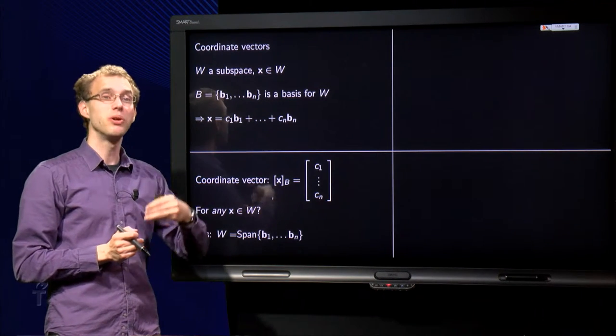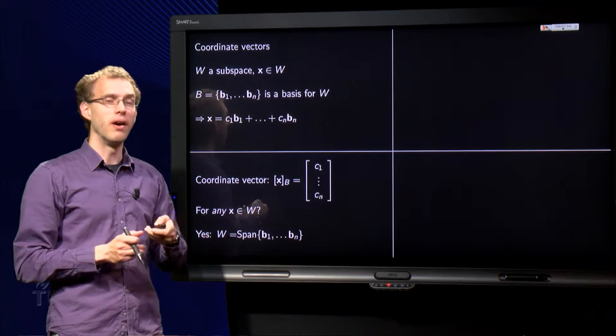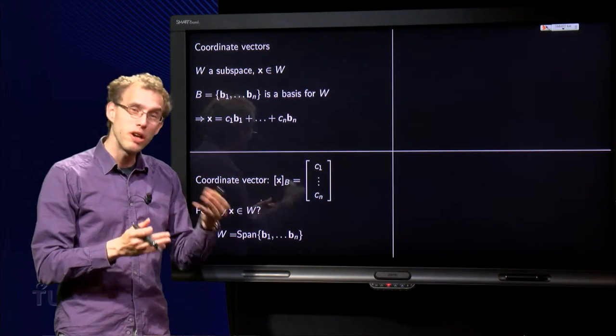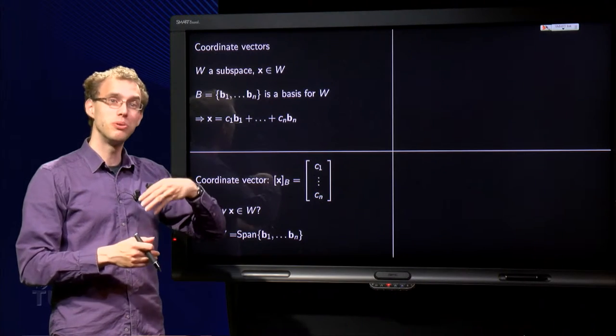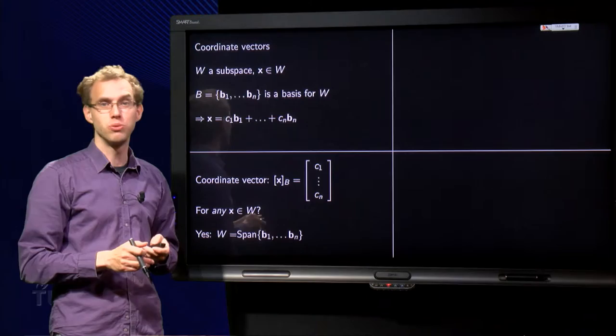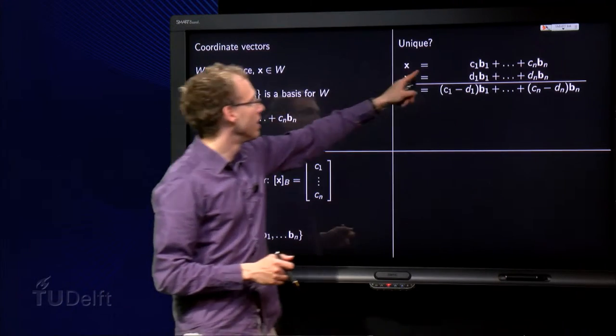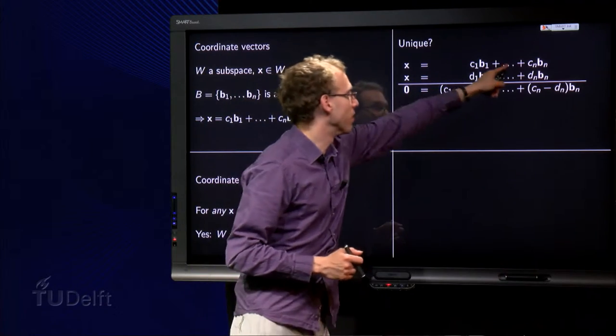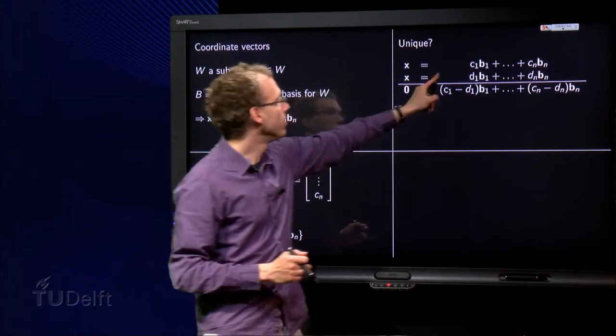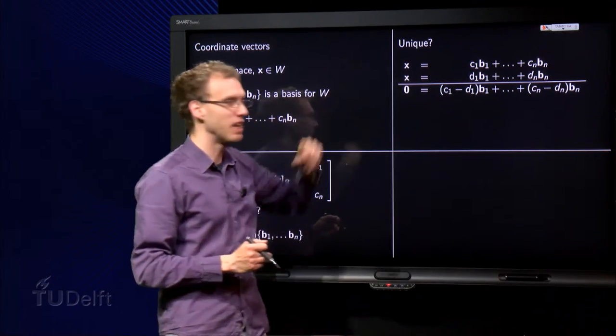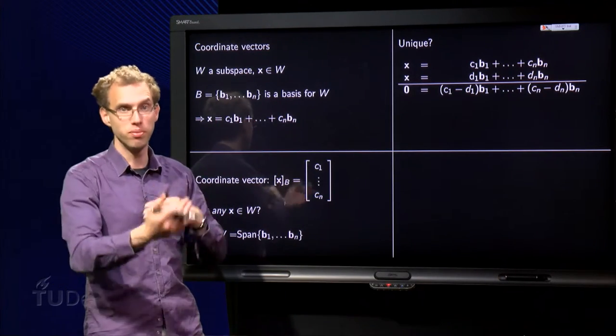Second question: can you do it in only one way? Well, if you want to prove you can do something in only one way, it is often good to assume you can do it in two different ways and show that you come to some contradiction. So let's try to do it in two different ways. We use weights c₁ up to cₙ, and we use weights d₁ up to dₙ. So x expressed in two different ways in terms of b₁ up to bₙ.